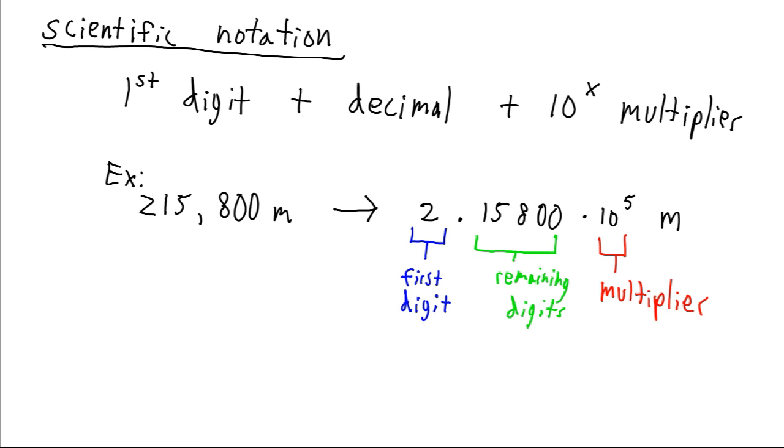This of course also works going the other direction. So if we have our 0.000046 grams, we are now dealing with some division by powers of 10. So that's where this minus sign comes in. So if we were to divide 4.6 by 10 five times, we would move the decimal over one, two, three, four, five times, and get back our original number.